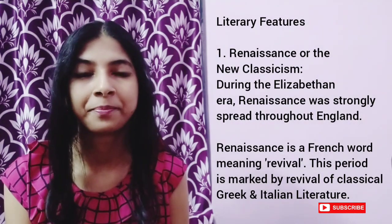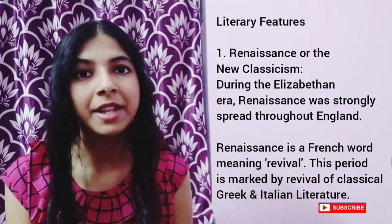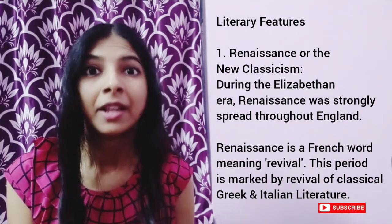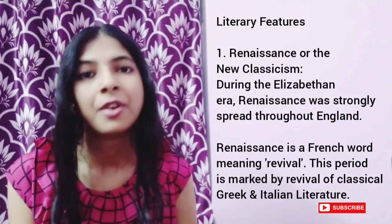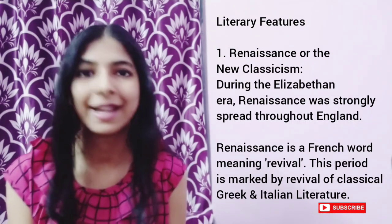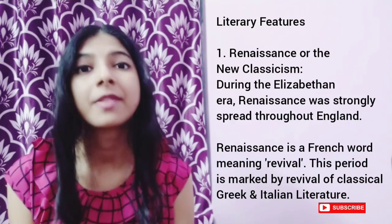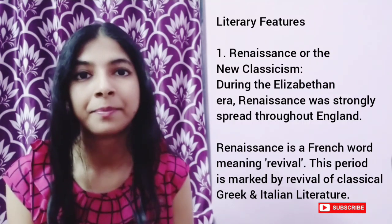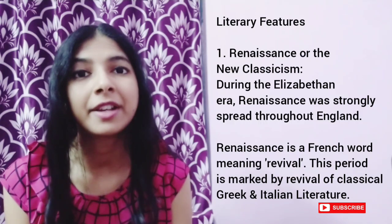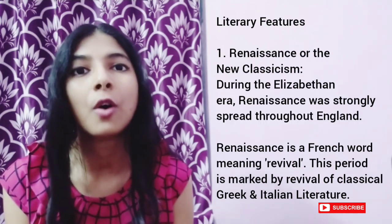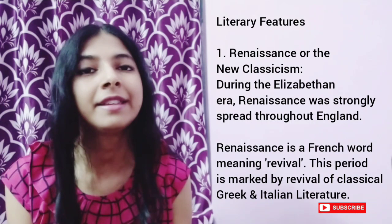Now that we have looked at the historical background and the political scenario of the Elizabethan Age, it's time to look at the literary features. Number one: Renaissance, or Classicism. During the Elizabethan Age, Renaissance was spread throughout England. Renaissance is a French word which means revival. This period was characterized by the revival of classical Greek and Italian literature.